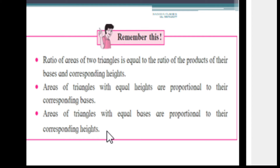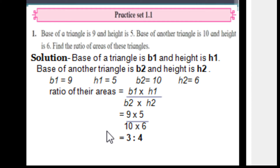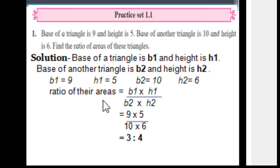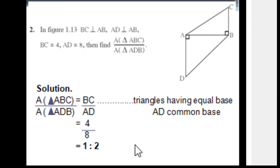Now we are going to solve Practice Set 1.1. Question 1: Base of the first triangle is 9 and height is 5; base of the second triangle is 10 and height is 6. Find the ratio of areas. Solution: ratio equals b1 × h1 upon b2 × h2 = 9 × 5 upon 10 × 6 = 45 upon 60. Simplifying: 3 upon 4. So the ratio of their areas is 3 : 4.